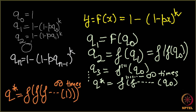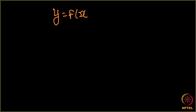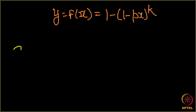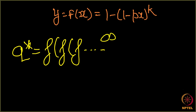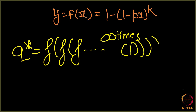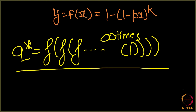Our overall aim now is: given the function y = f(x) = 1 - (1 - px)^k, the value of q* is f applied infinitely many times to 1. Once we find this value, our task is done. Given the value of R0, we want to determine q*, and we will find it in the next one or two lectures.